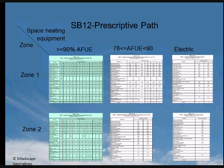If the space heating system is between 78 and 90% AFUE, then tables 2.1.1.2.b and 2.1.1.3.b should be consulted. And if more than 10% of the heating capacity is in the form of electric resistance heat, then tables C should be used.